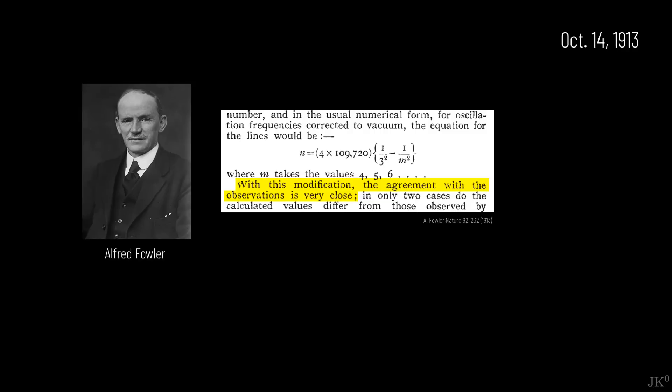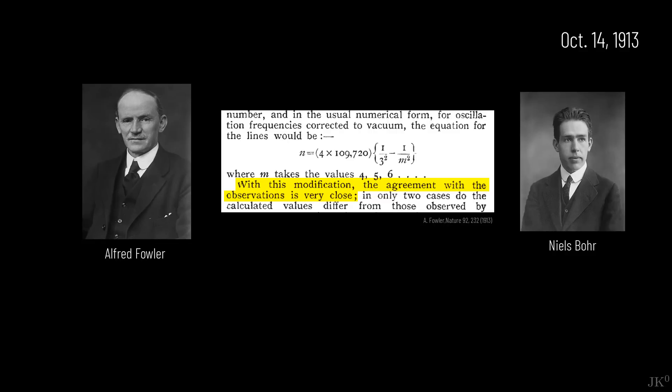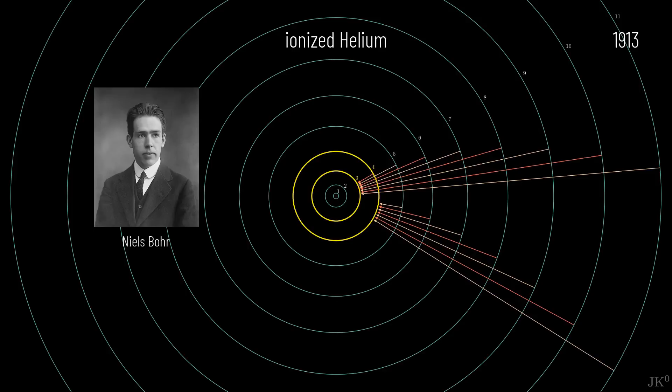On October 14th, Fowler published a paper in Nature confirming the agreement between the data and Bohr's formula for helium. Bohr was proven right. The success of his model describing the abnormal spectral lines encouraged Bohr to extend the model.